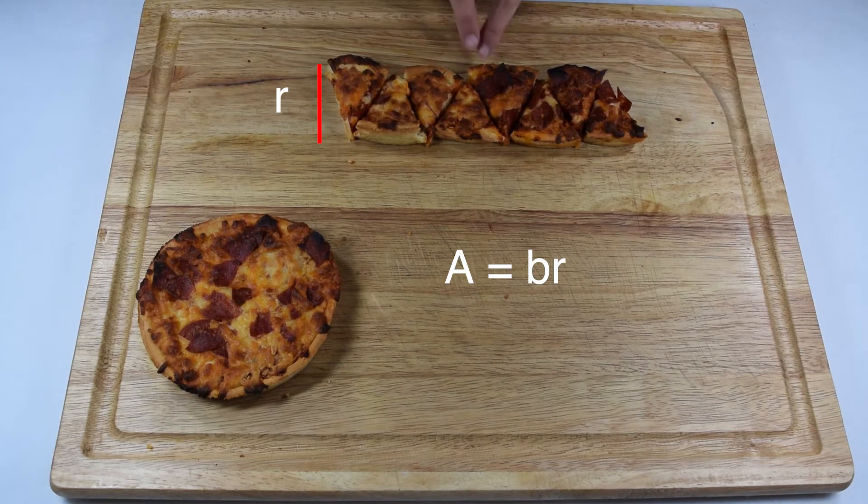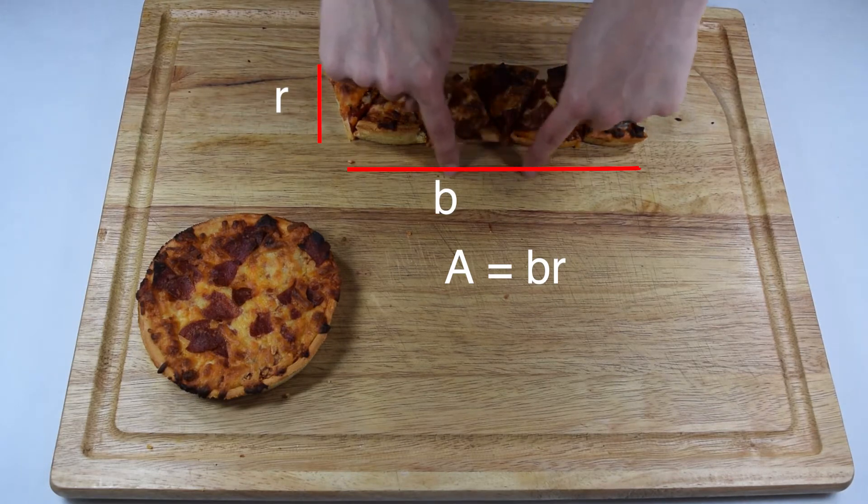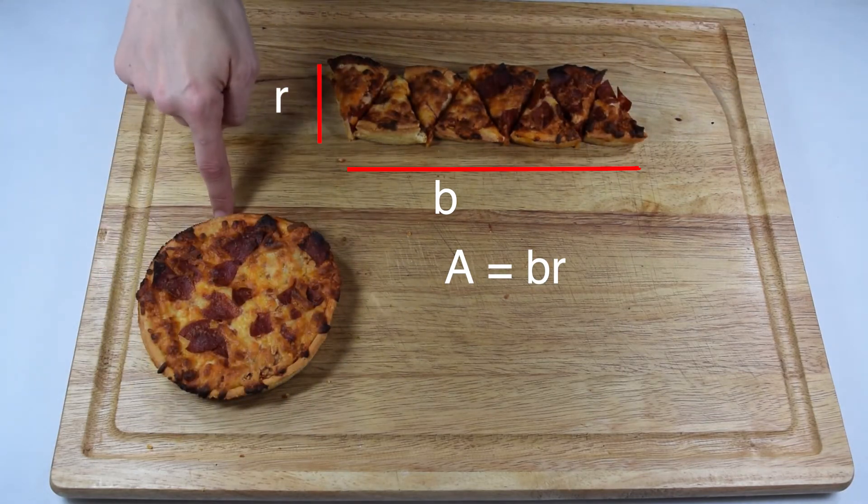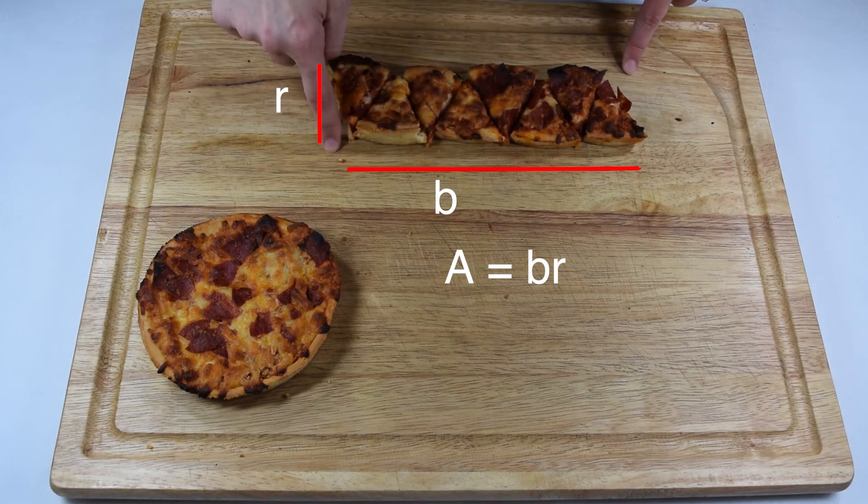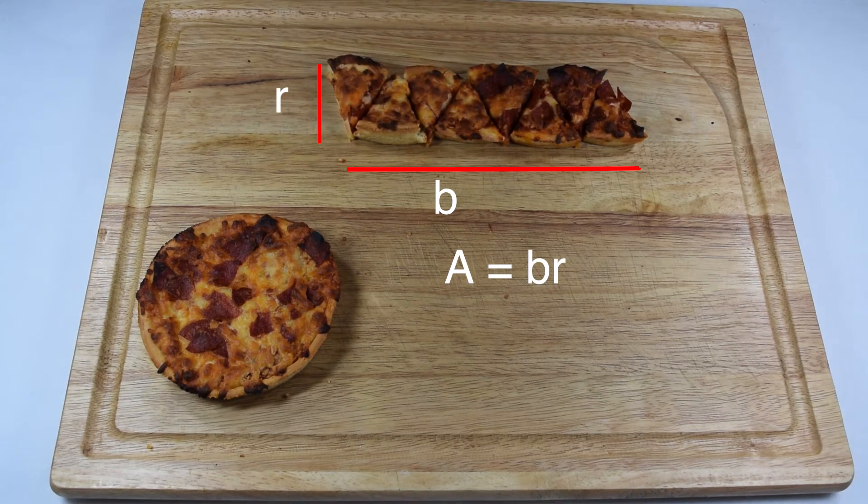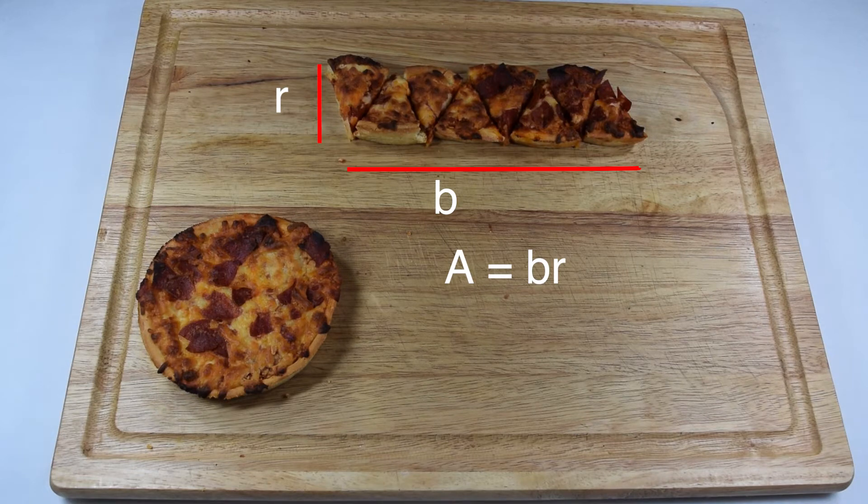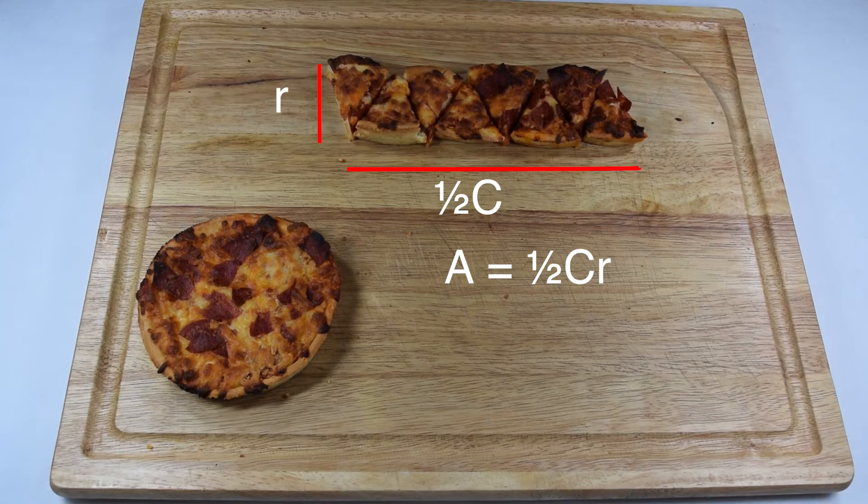Now we need to look at the bases. Our top base and our bottom base are both created from the edge of the circle, or the circumference. However, the circumference is split between the top and bottom, so that means each base represents half the circumference. So when I substitute that into my equation, I'm now working with area is one-half times circumference times radius.